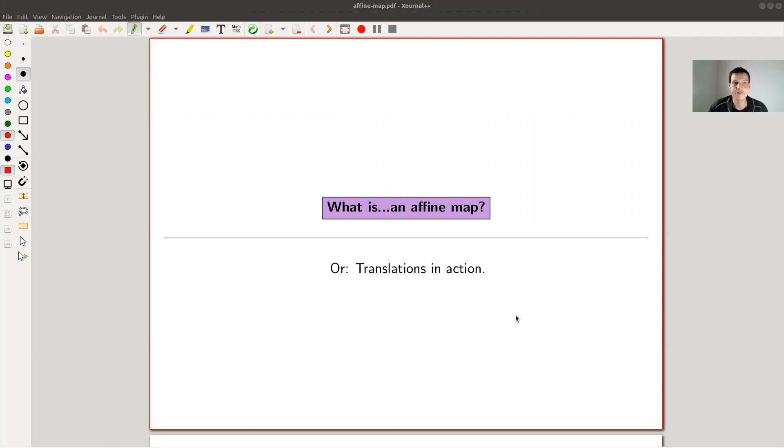Okay welcome everyone to my continuation of what is linear algebra. Today: what is an affine map or translations? So let's just jump right into it.